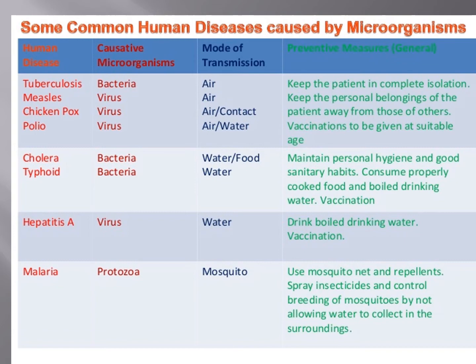Measles: causative microorganism is virus, mode of transmission is air. Chickenpox: caused by a virus, transmitted through air or contact. Polio: caused by a virus, transmitted through air and water. For diseases where the mode of transmission is air or contact, regardless of the causative agent, the patient must be kept in complete isolation, personal belongings kept separate, and vaccination given at suitable ages in the case of viral diseases.